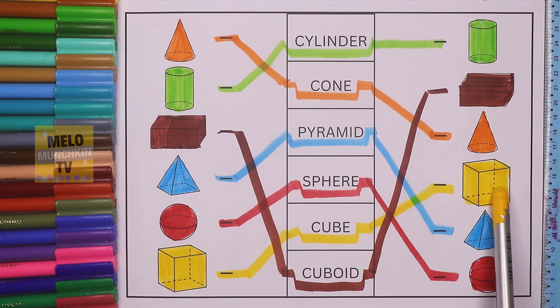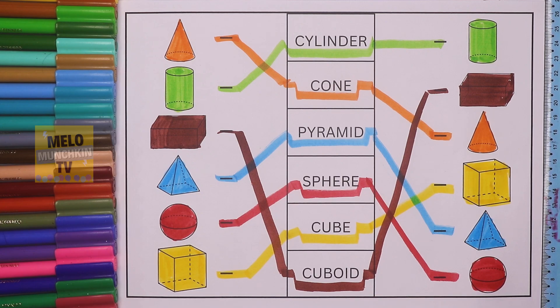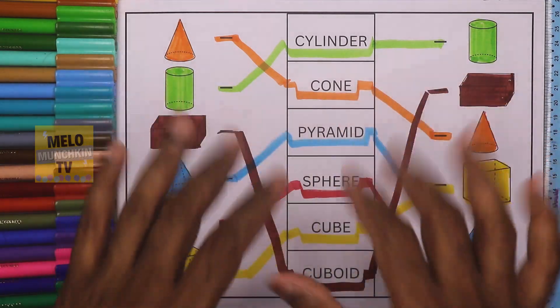So we've learned six 3D shapes and colors. I hope you have understood and learned something from this video. If you did, hit a thumbs up and share this video with your friends. See you in my next video — till then take care and bye bye!